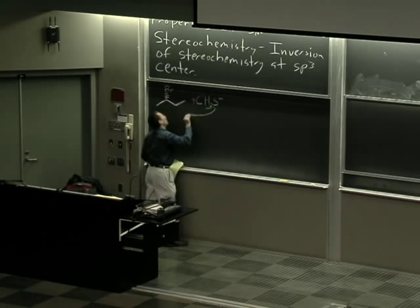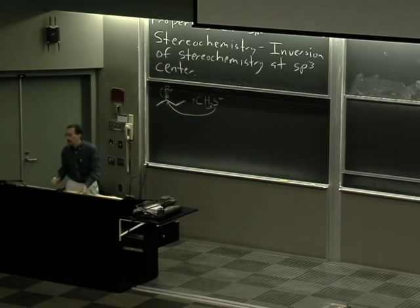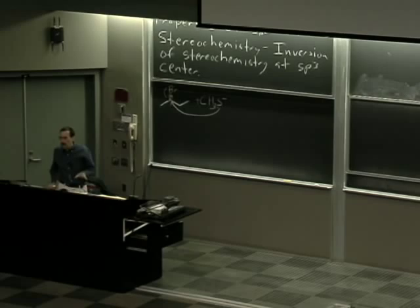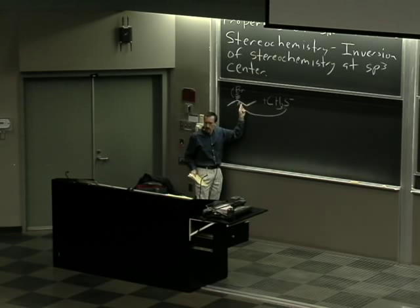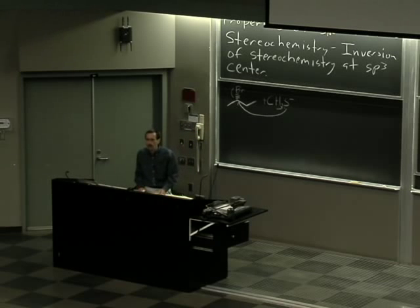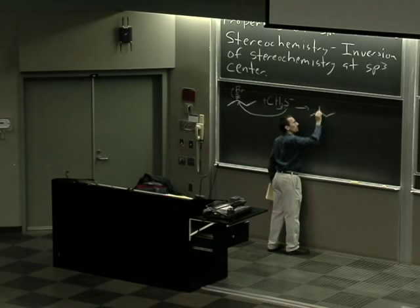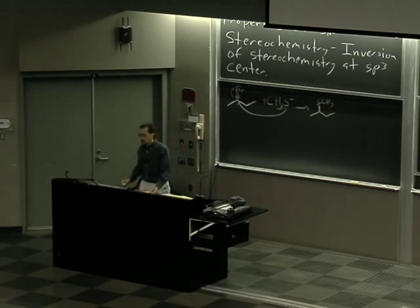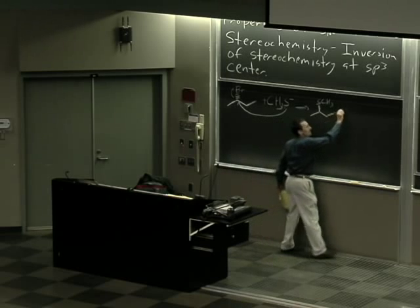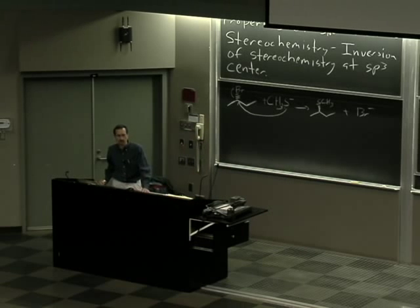If I show this reaction: we'd have a nucleophilic attack. We come in on the backside and kick the bromine out. We're coming in at 180 degrees from behind the carbon-bromine bond, and the overall result is that we invert the stereochemistry at the center. In other words, the bromine was going back into the board, but the thiomethyl group in our product is coming out of the board. We can also write Br⁻ as our other product, though organic chemists often don't write this since we focus on the organic components.